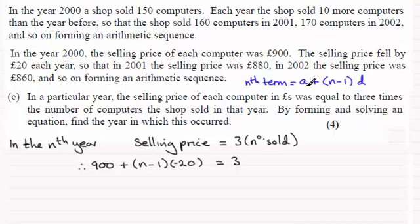And we know for the number sold, the first year in 2000, 150 was sold. So it'd be three times 150 for the first term plus n minus 1 times the common difference. And the computer sales went up 10 more each year, so this would be times 10 for the common difference.